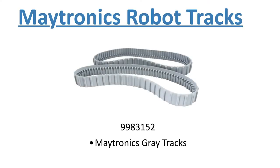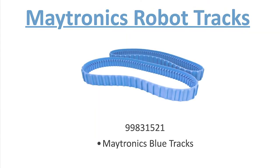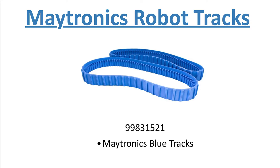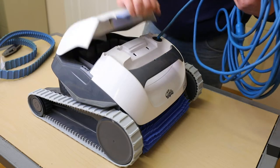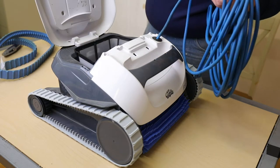This track is manufacturing part number 9983152 for the gray and 99831521 for the blue. These tracks are the same and the only difference is color. They fit all robots with a basket in them.